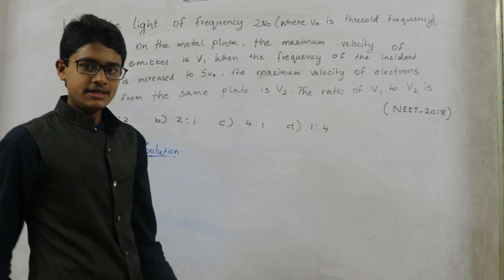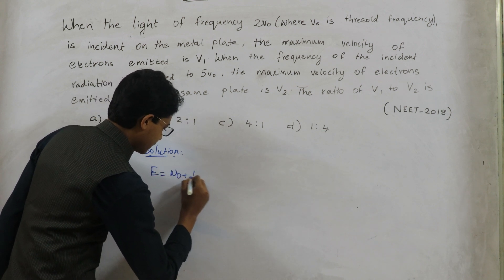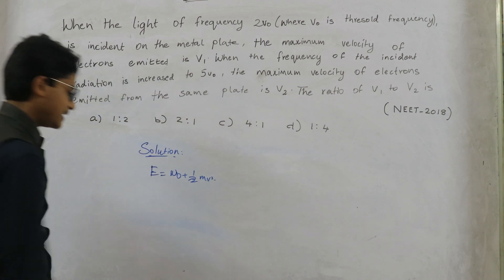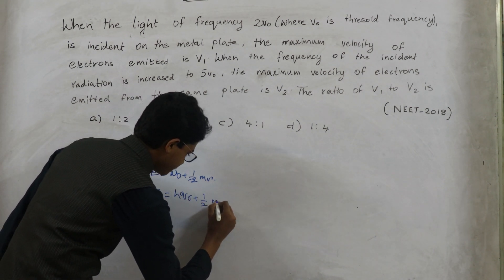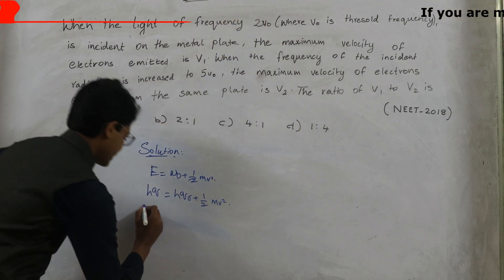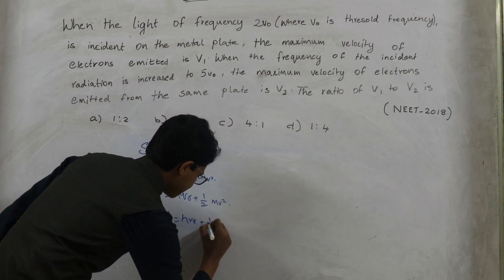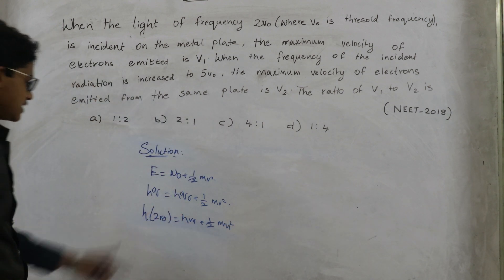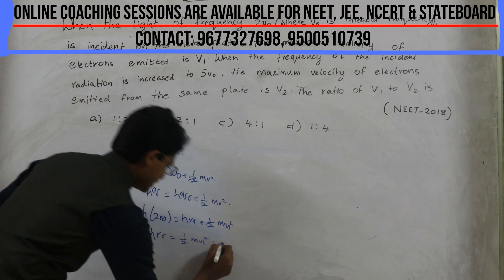According to Einstein's photoelectric equation, the formula is: E = W₀ + ½mv². Substituting 2ν₀ in place of ν, we get h(2ν₀) = hν₀ + ½mV1². Transposing hν₀ to the left-hand side, we get hν₀ = ½mV1². Let this be equation 1.